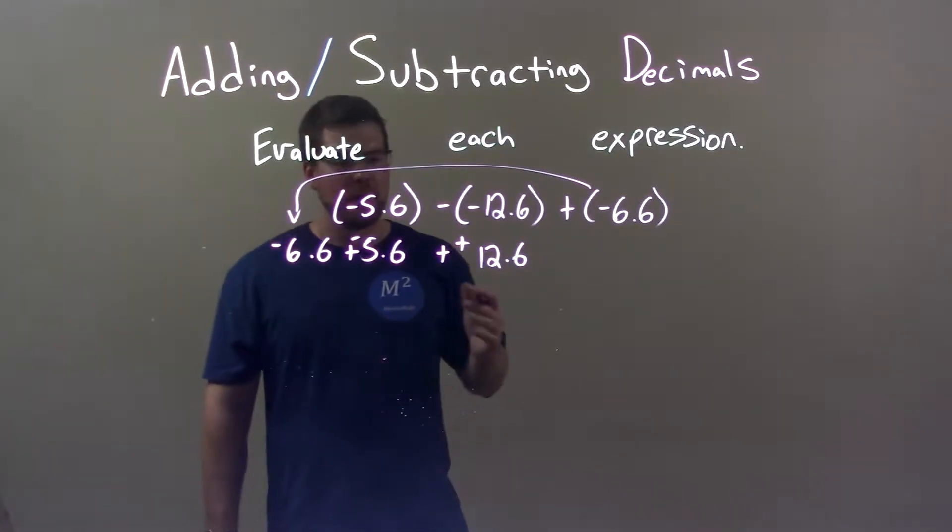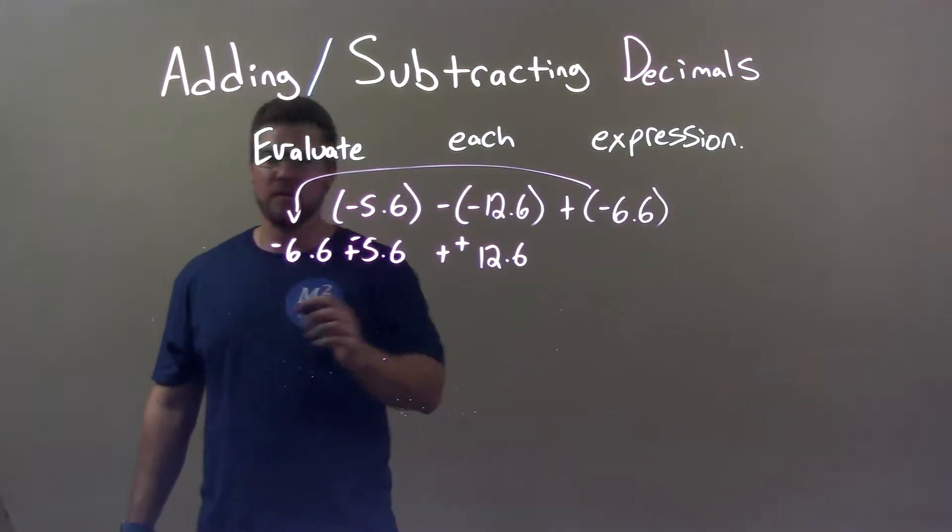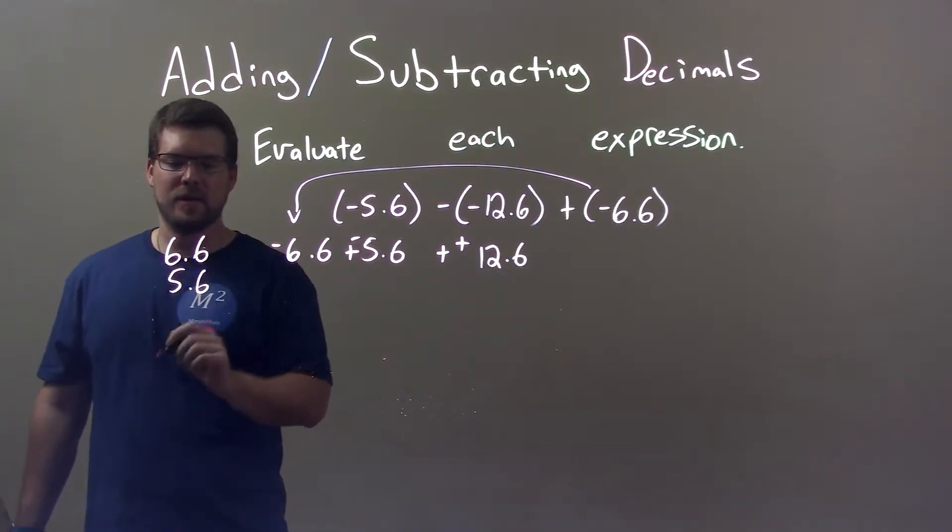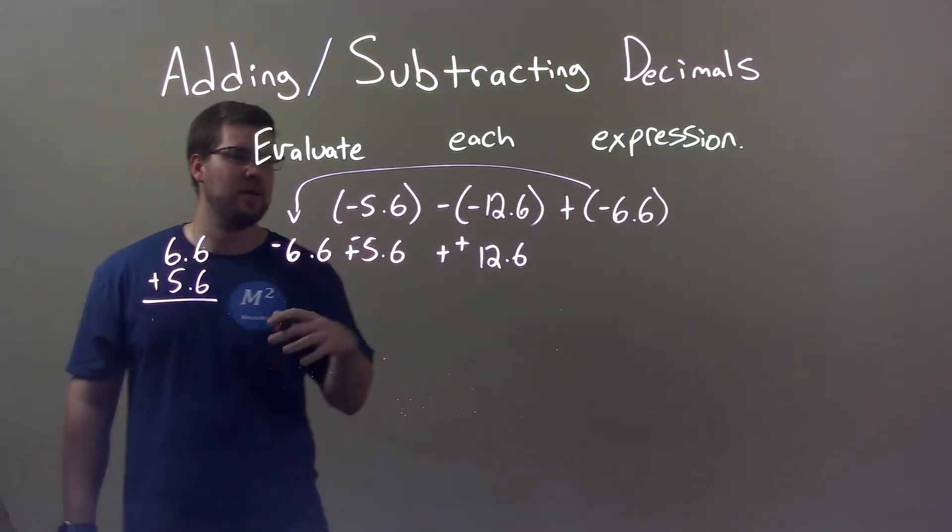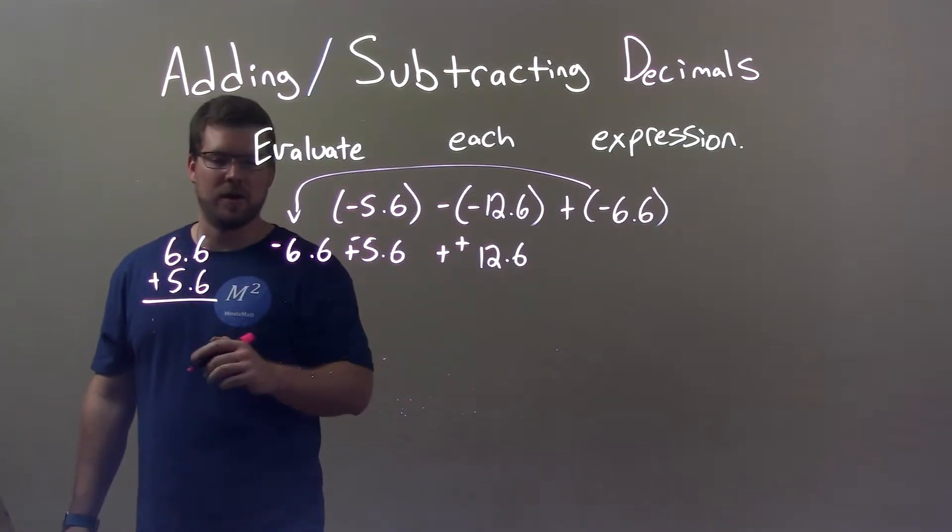So what I'm going to do first is I'm going to combine these two negatives. Negative 6.6 and negative 5.6. So we can do that right here. 6.6 and 5.6. Now, we know that number has to be a larger negative, so I'm just going to treat them as positive, but put a negative on afterwards.